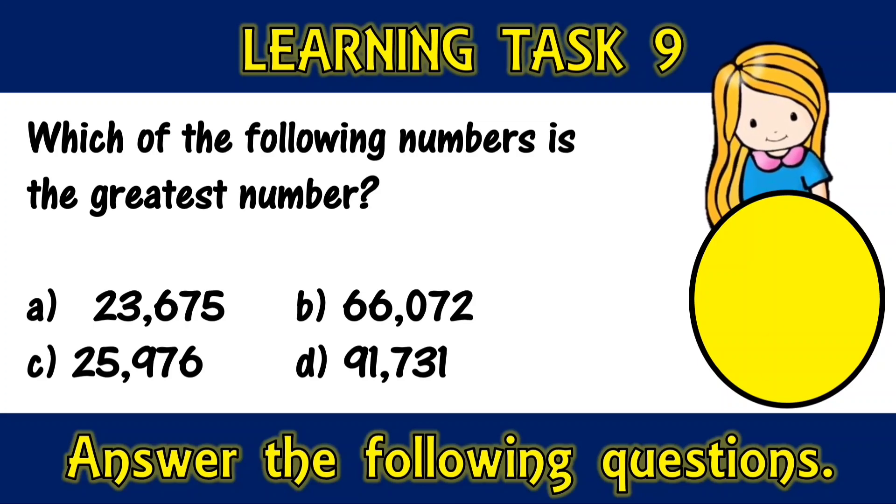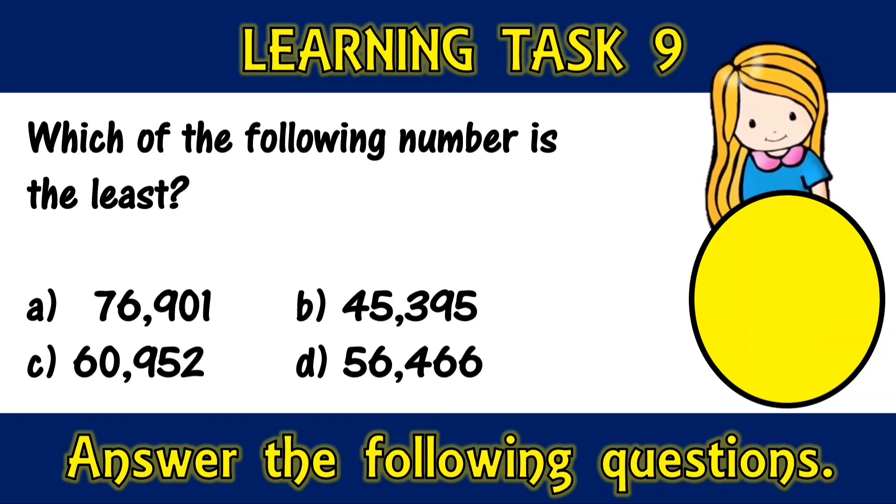Which of the following numbers is the least? A. 76,901, B. 45,395, C. 60,952, or D. 56,466.